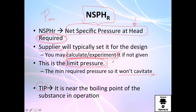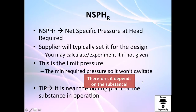One tip: the NPSH required is near the boiling point of the operating substance, but not exactly at that point. You might think the vapor pressure of water — say 2.5 atmospheres — is your limit, but that's not quite right, because at the impeller eye the pressure drops further. You need the actual safe operating value across different temperature ranges. Also note that vapor pressure depends on the substance: alcohol boils differently than water, water differently than crude oil, and so on.